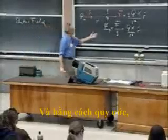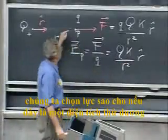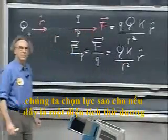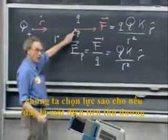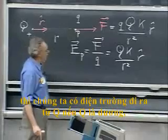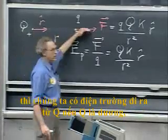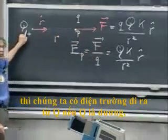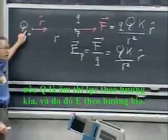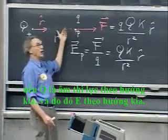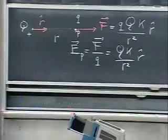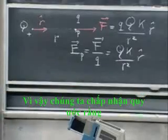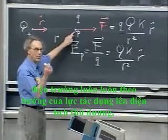And by convention we choose the force such that if this is a positive test charge, then we say the E field is away from Q if Q is positive. If Q is negative the force is in the other direction and therefore E is in the other direction. So we adopt the convention that the E field is always in the direction that the force is on a positive test charge.